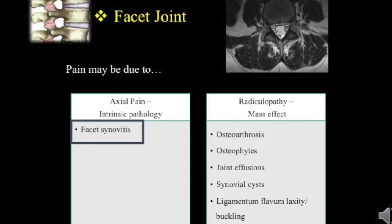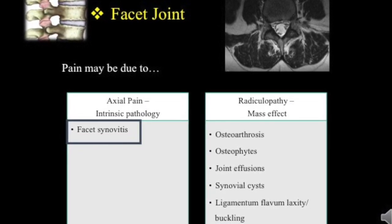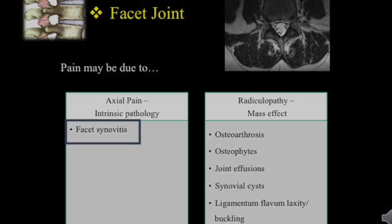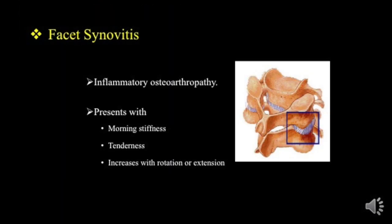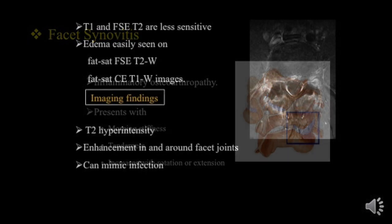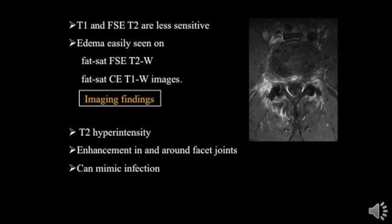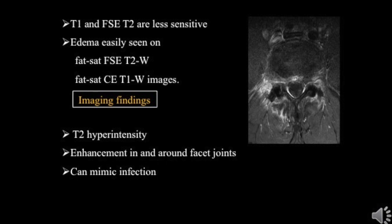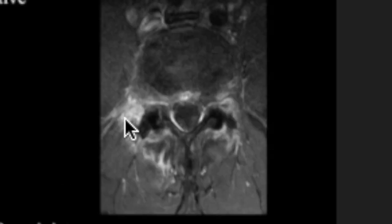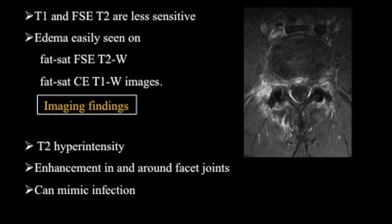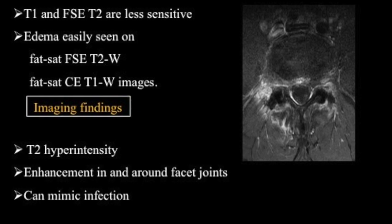Facet synovitis presents as inflammatory osteoarthropathy with morning stiffness and tenderness that increases with rotation and extension. The imaging finding consists of T2 hyperintensity on axial images. It is important to assess axial images of the facet joints as well as sagittal views — there will be enhancement in and around the facet joints. These may also mimic infection in early phases.